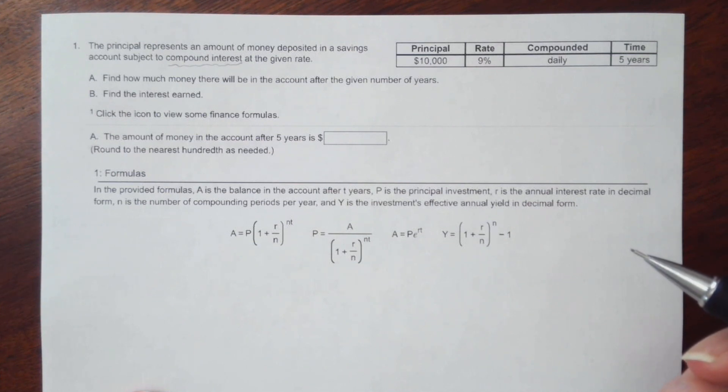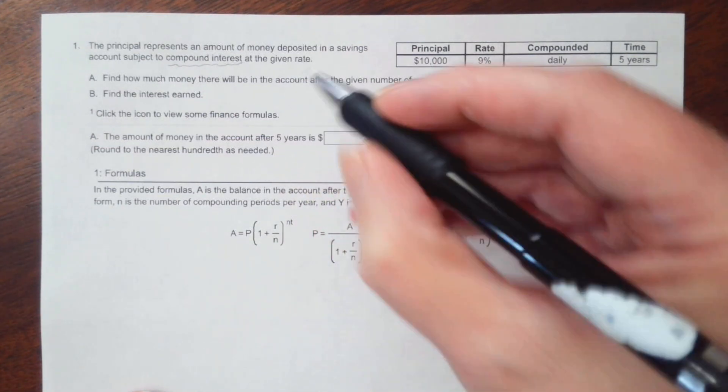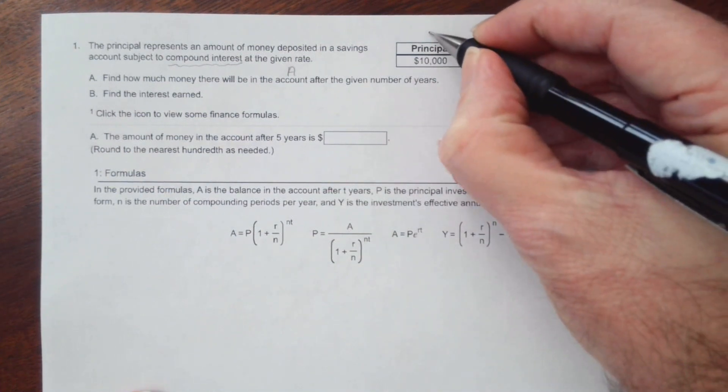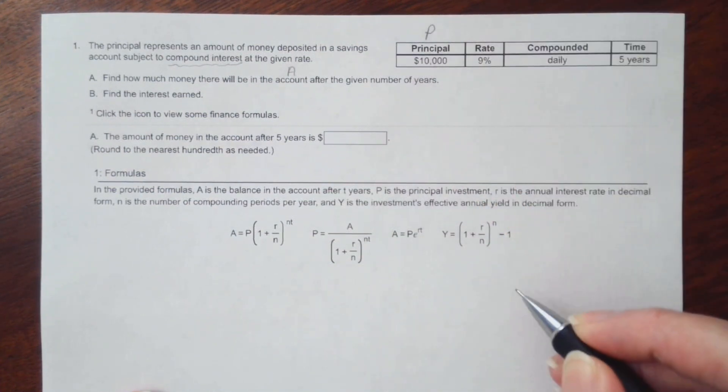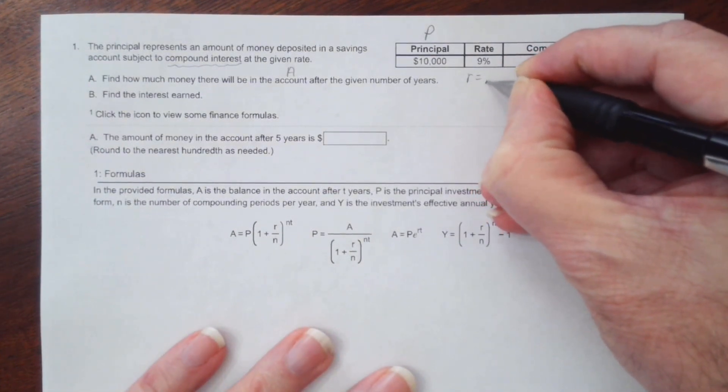It says find out how much money there will be in the account after the given number of years. So what we're looking for is A or the future value. Notice they gave us the principal or what we sometimes call the present value. The interest rate written as a decimal will be 0.09.